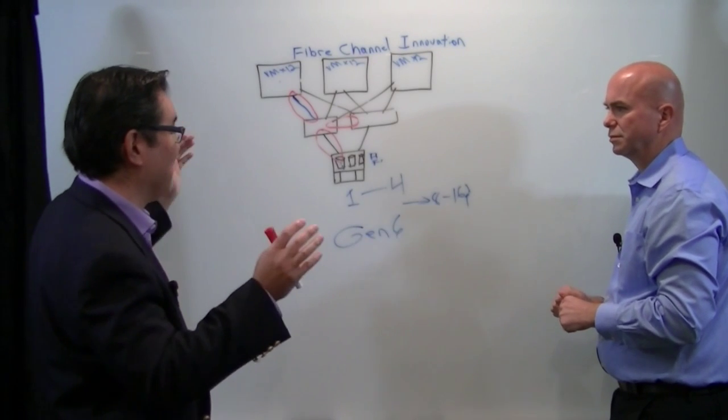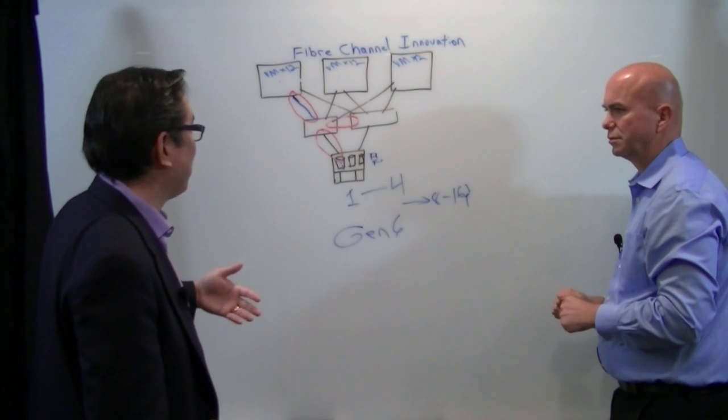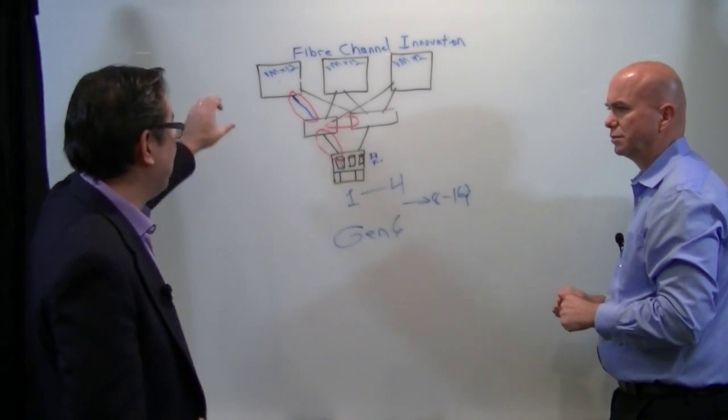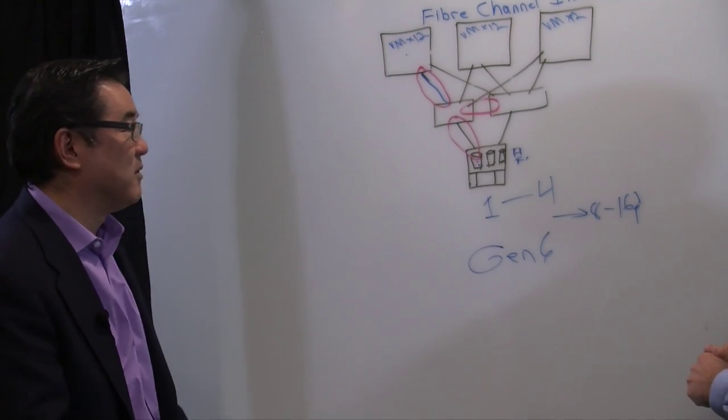Connecting all this stuff together is the SAN, and you want to make sure you have enough performance, enough bandwidth, enough I.O. capability to handle everything that's coming on both ends of the network.